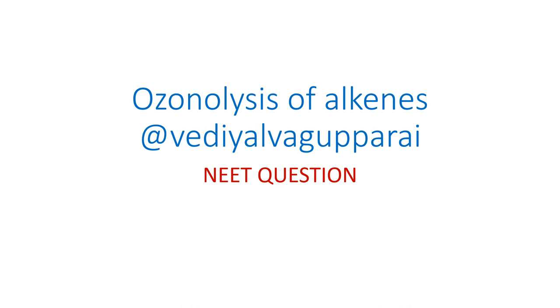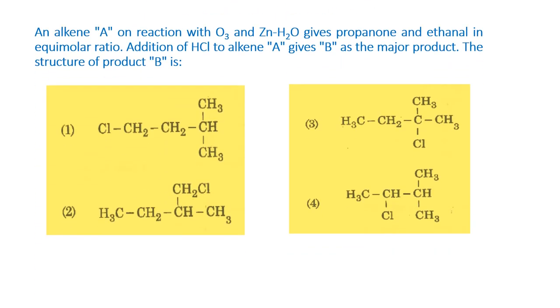This video is based on a NEET question. The question goes like this: An alkene A on reaction with ozone and zinc H2O gives propanone and ethanal in equimolar ratio. Addition of HCl to alkene A gives B as the major product. The structure of the product B is.